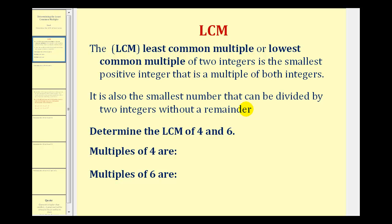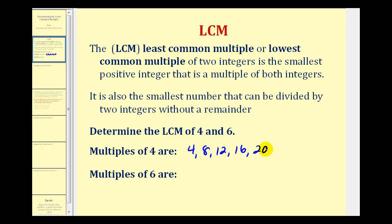So if we want to determine the least common multiple of four and six, one way is to just list multiples of four, list multiples of six, and then find the smallest number these two lists have in common. If we list multiples of four, or count by fours, we would have four, eight, twelve, sixteen, twenty, twenty-four, and so on.